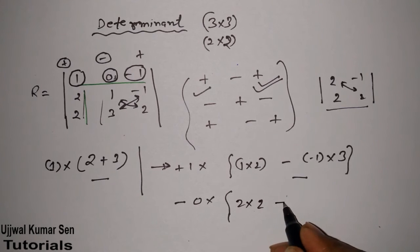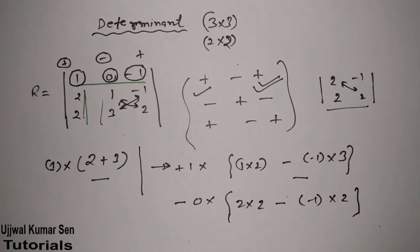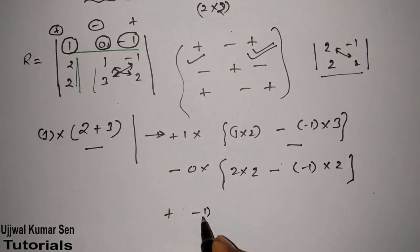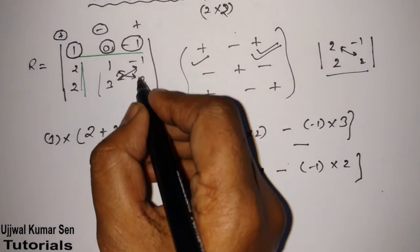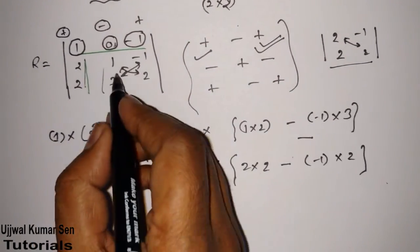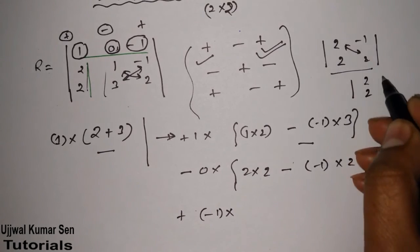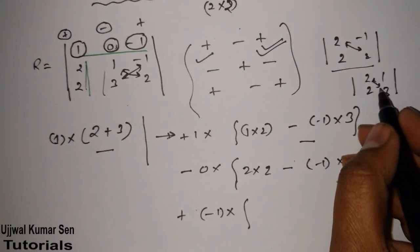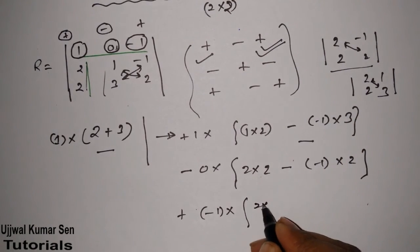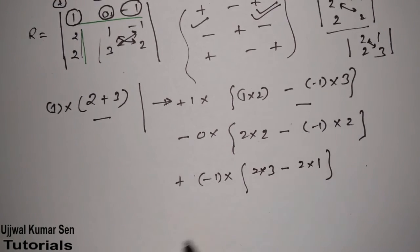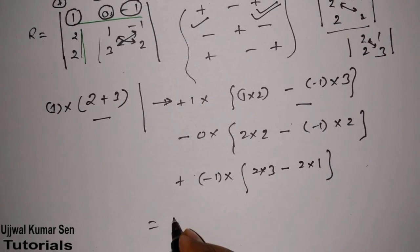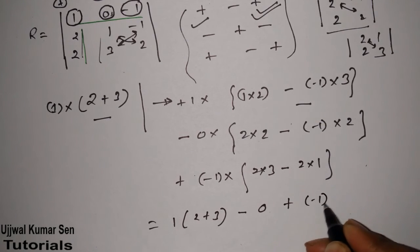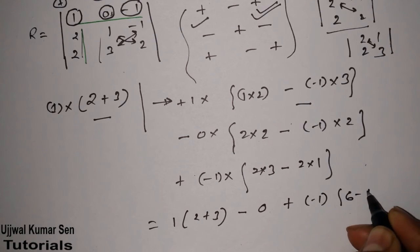Last, this is plus, and I choose -1. I hide the corresponding column and row, so what remains is 2, 2, 1, 3. Cross multiplication: -1 multiplied by (2 multiplied by 3 minus 2 multiplied by 1).